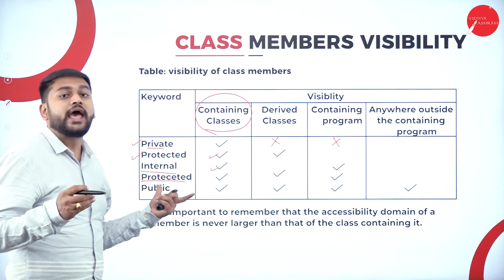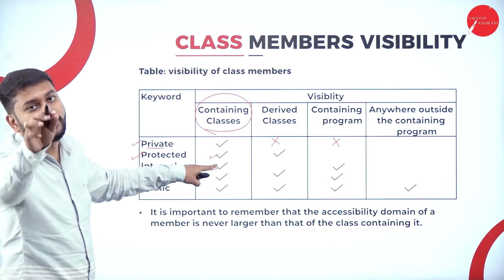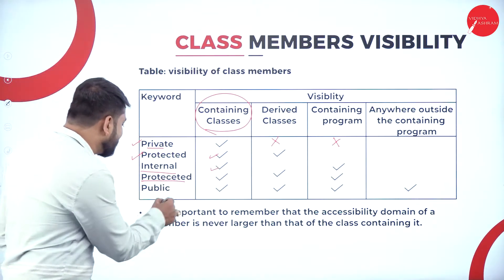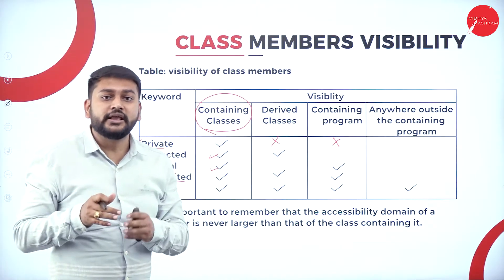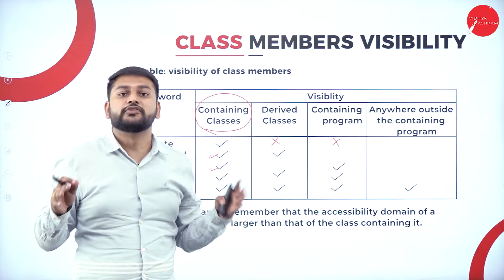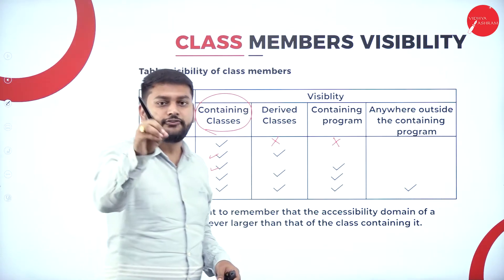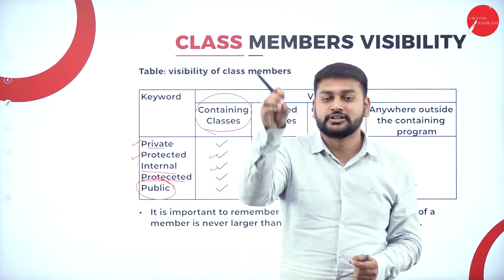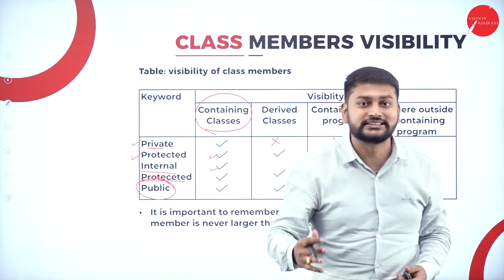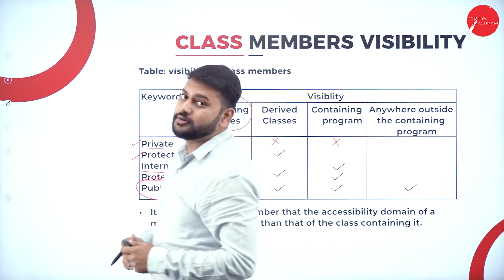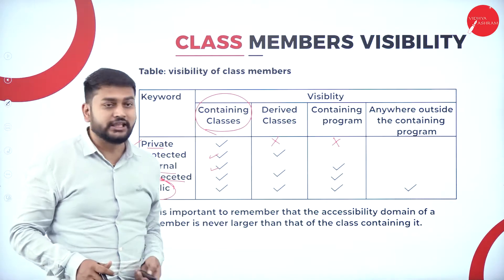It is not just protected - it is protected internal. Protected internal behaves the same as internal. Finally, the last one is public. As the name itself says, public gives you complete visibility - you can access it wherever you want. There is no restriction. If you define that class or program as public, you don't have any restrictions on visibility; you can access it anywhere.